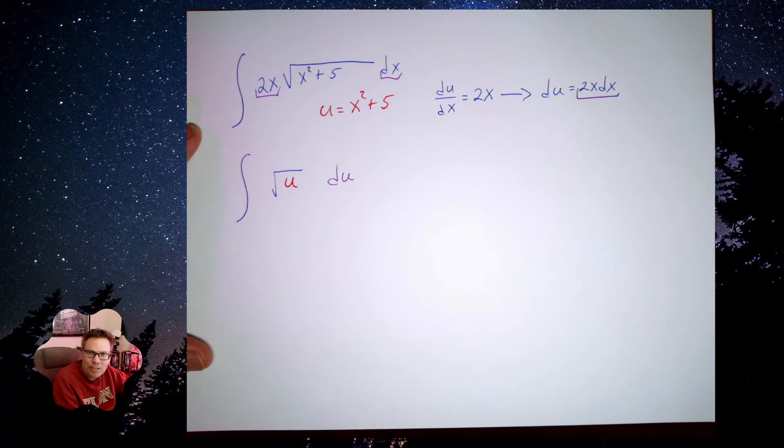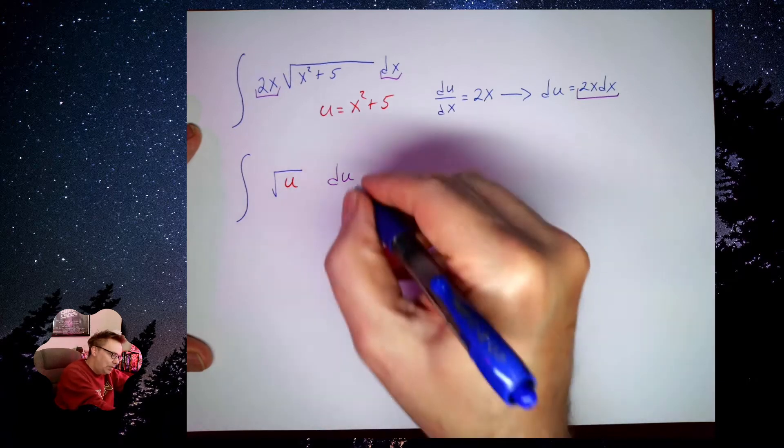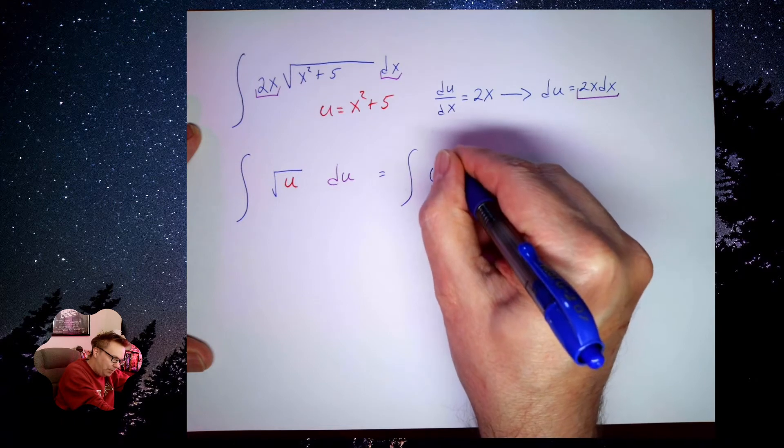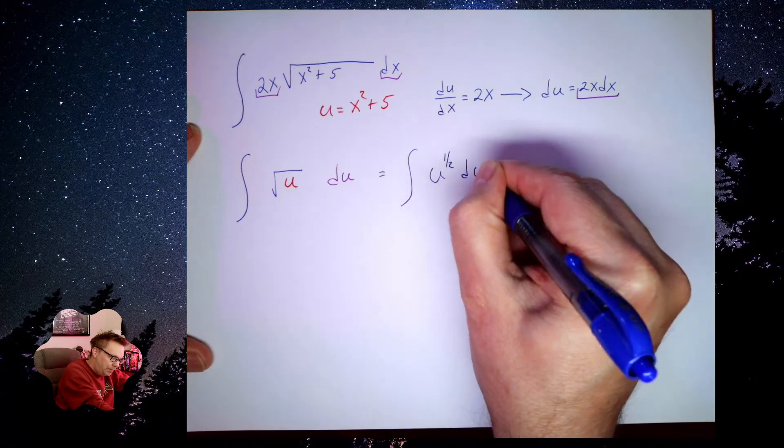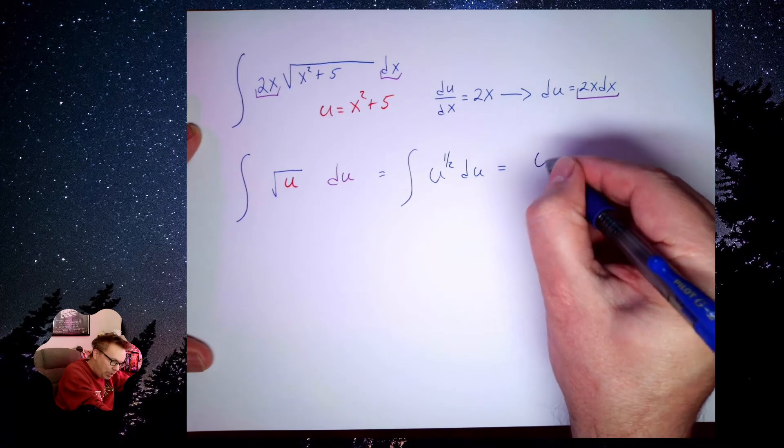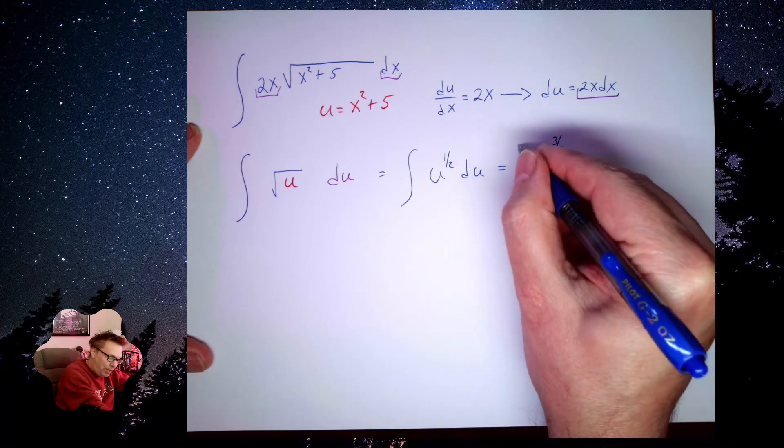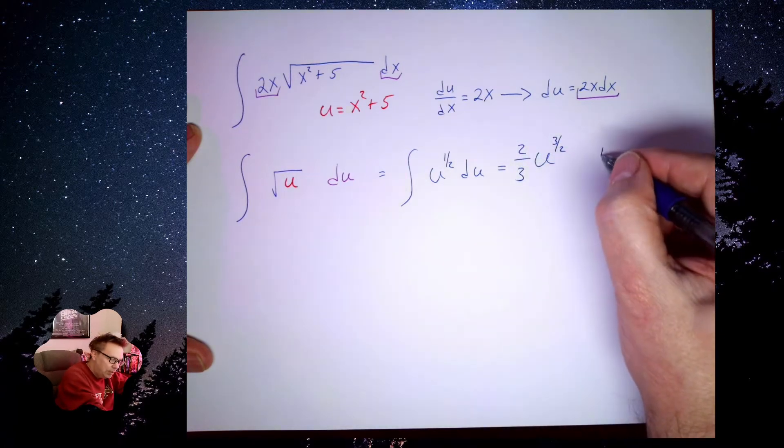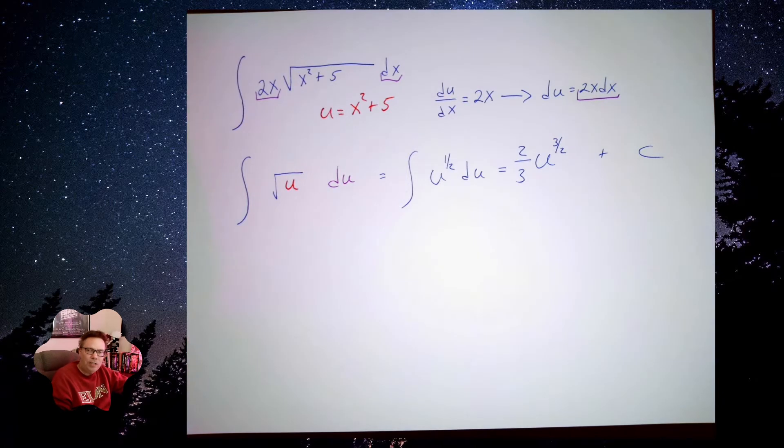And this integral is pretty easy to solve. So rewriting this very quickly into exponential form, I wind up getting u to the 3 halves divided by 3 halves, which is the same thing as multiplying by 2 thirds, plus some constant.